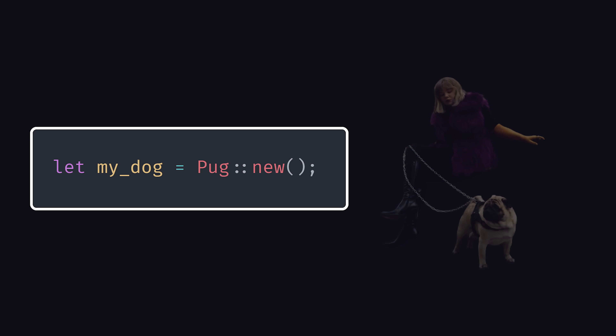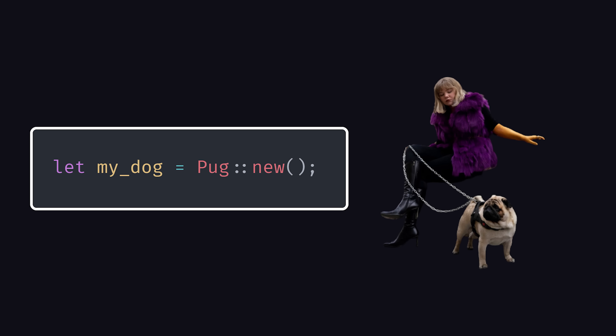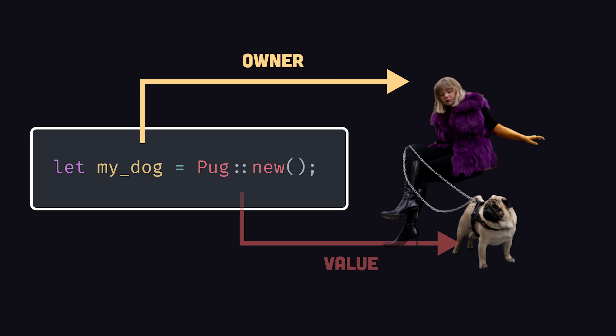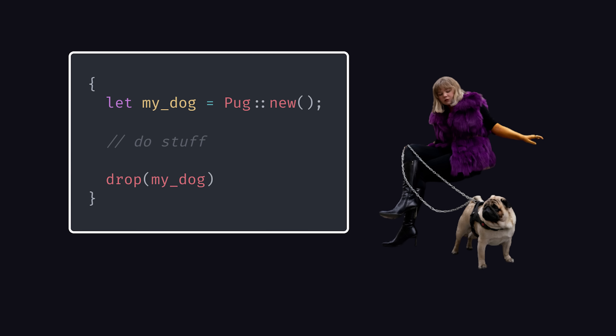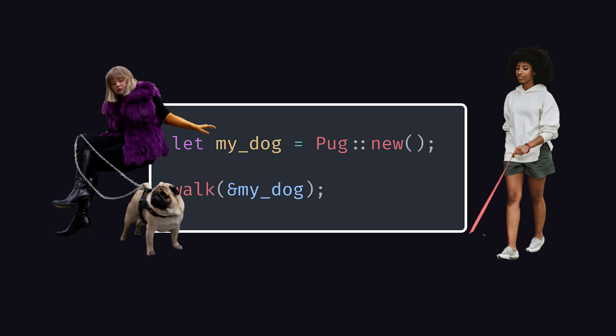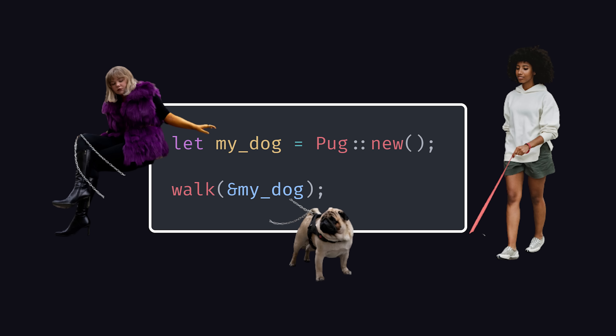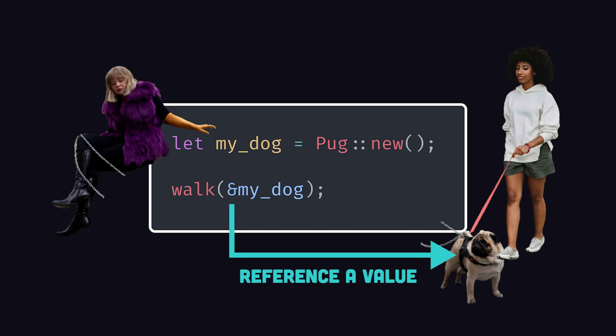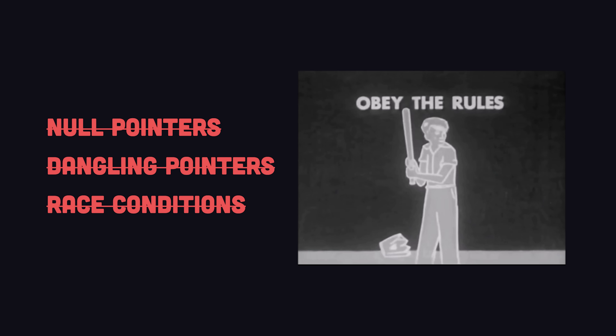Every value in a Rust program is assigned to a single variable known as its owner. When that variable goes out of scope, the memory allocated to it is dropped automatically. In some cases, though, you may want to pass a reference to a different part of the program. Borrowing allows you to access a reference in memory without taking ownership of it.